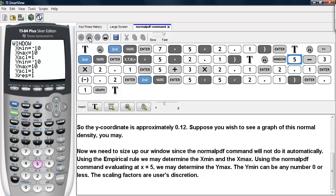So we'll go ahead and type window. We'll say 5, the mean, minus 3 times the standard deviation, 2.1.